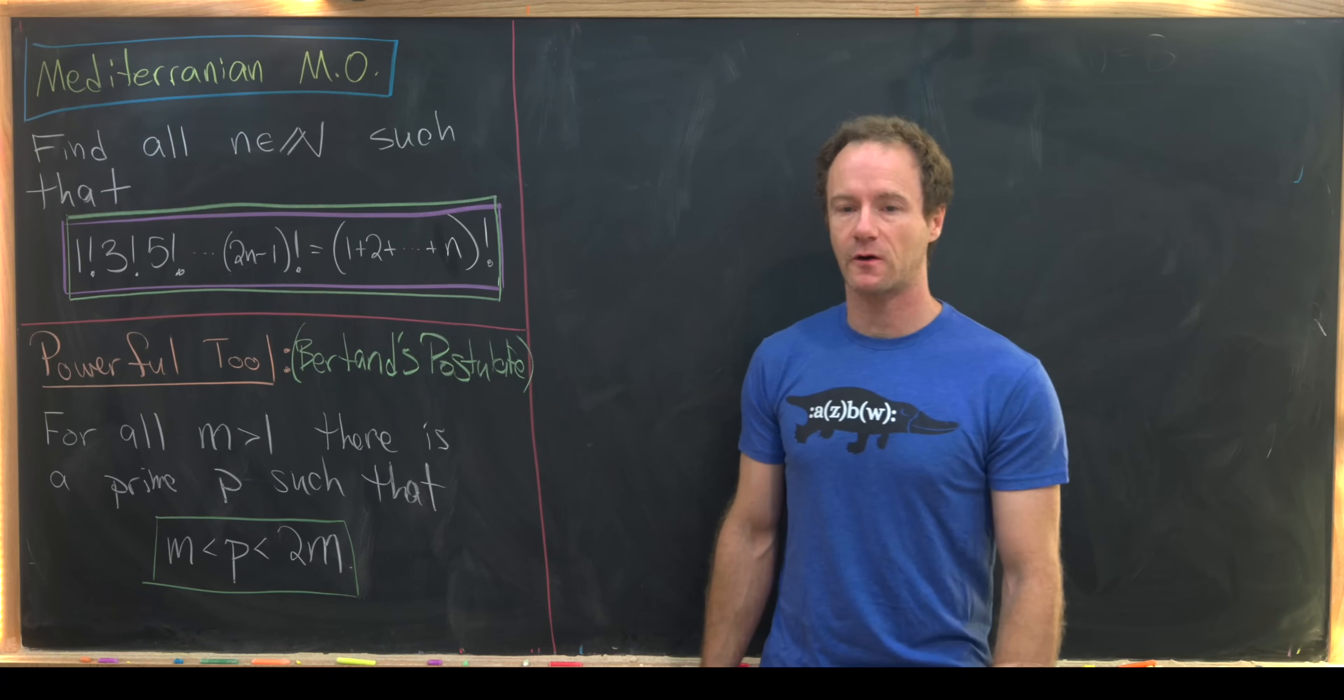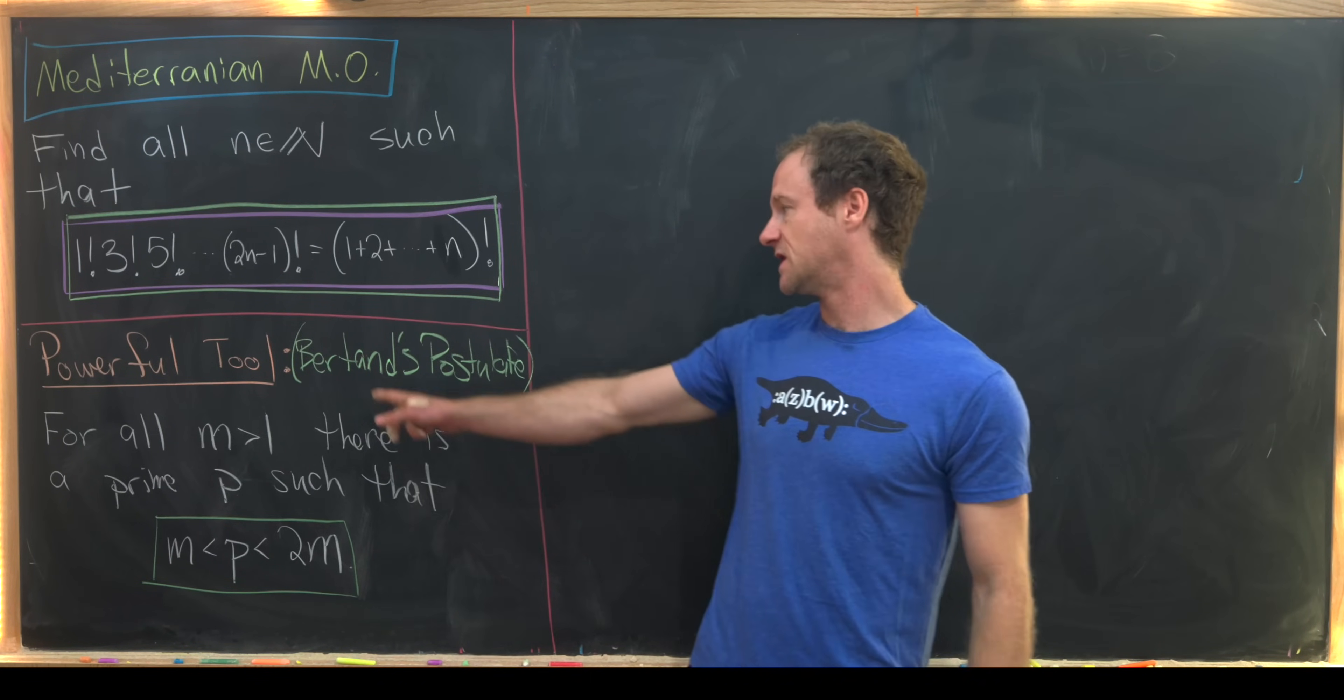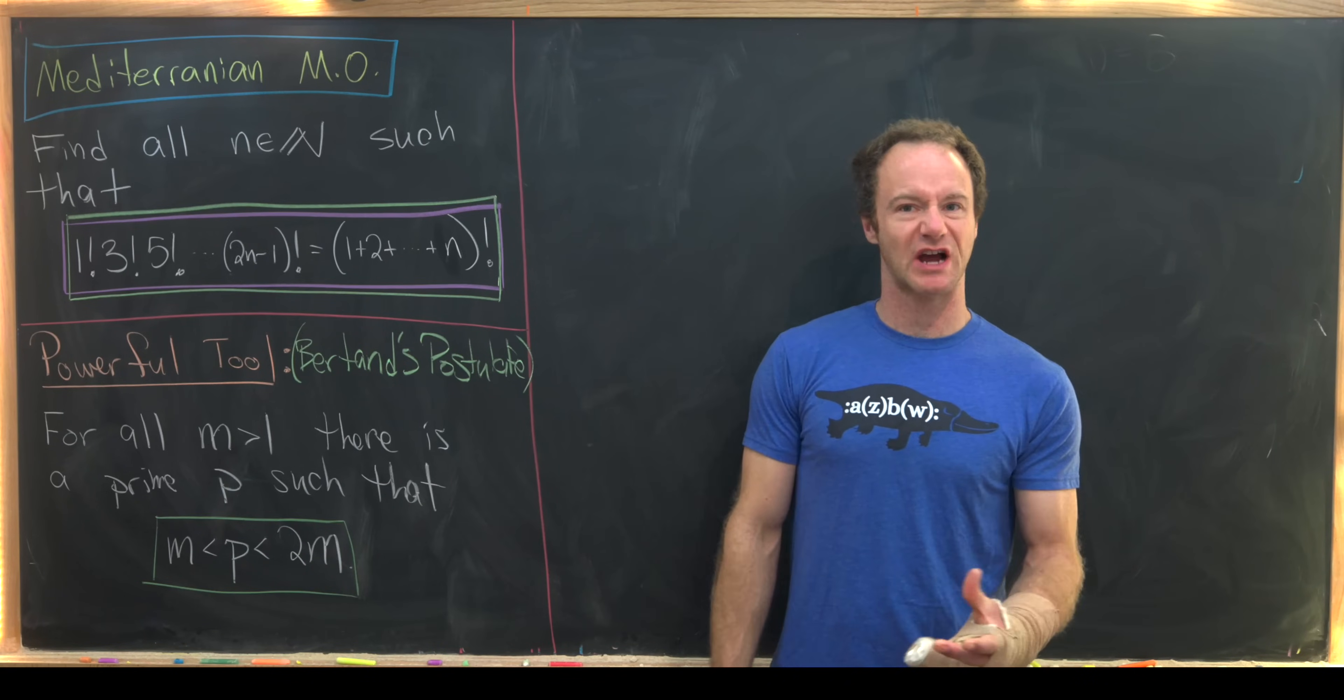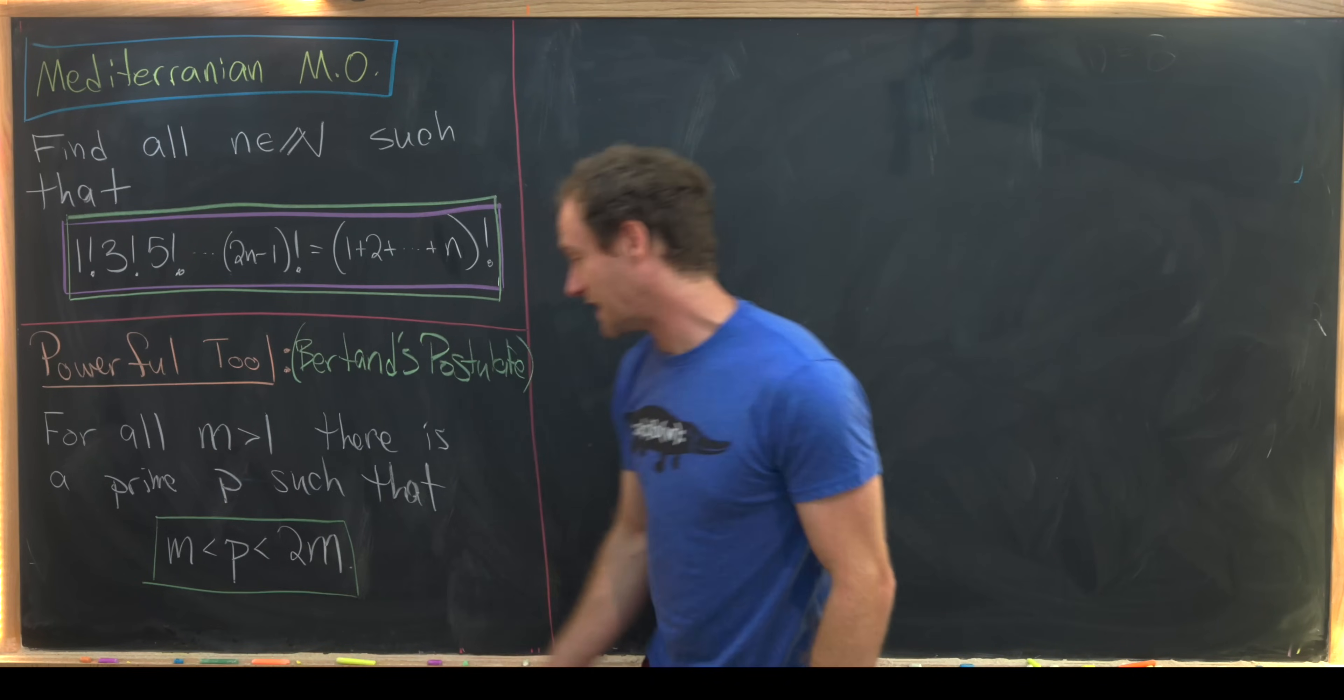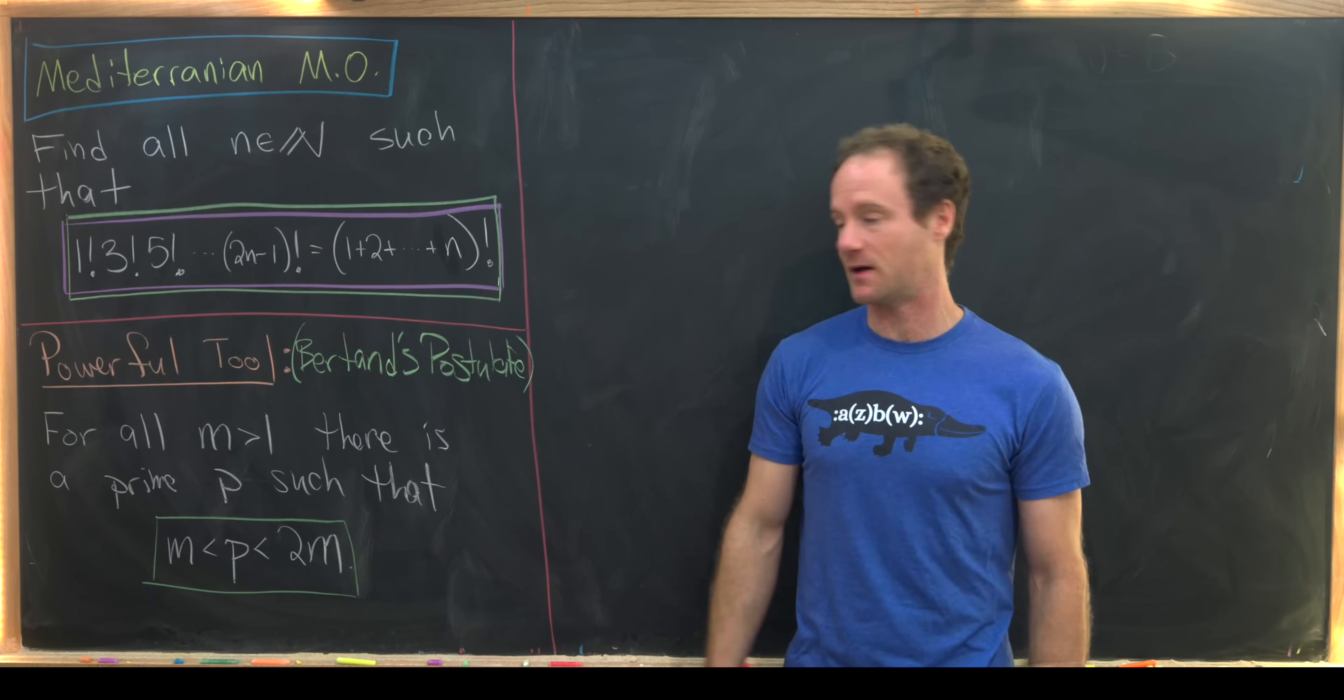That really powerful tool that we will use, which is not often used in math contests but it's sometimes helpful and I think it's fair game, is called Bertrand's postulate. It says for all numbers bigger than 1, which I'm calling m, there is a prime p such that m is less than p which is less than 2m. So in other words, you can always find a prime between a number and twice that number.